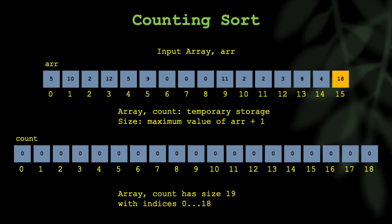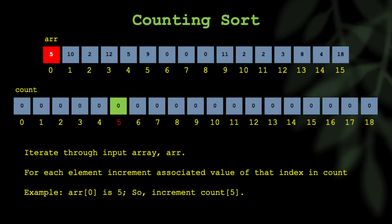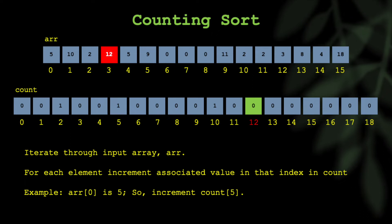Then what you want to do is iterating through the input array, for each element, you're going to increase the value at the index of count that is showing at the current index of the input array. If that makes very little sense to you, you should take a look at the graphic here. We start with index 0 of input array, and we have 5. So then you go to the count array, highlighted at index 5, and you'll increment it. That becomes 1, and you move to the next number, 10. Then you go to the 10th index in count and increment that. Then you go to 2, and then you increment 2 down in the count array. You go to 12 as the next value in the input array, increment that corresponding index in count, and then you get 5 again. So now at index 5 of count, you have 2, because twice that number has shown up.